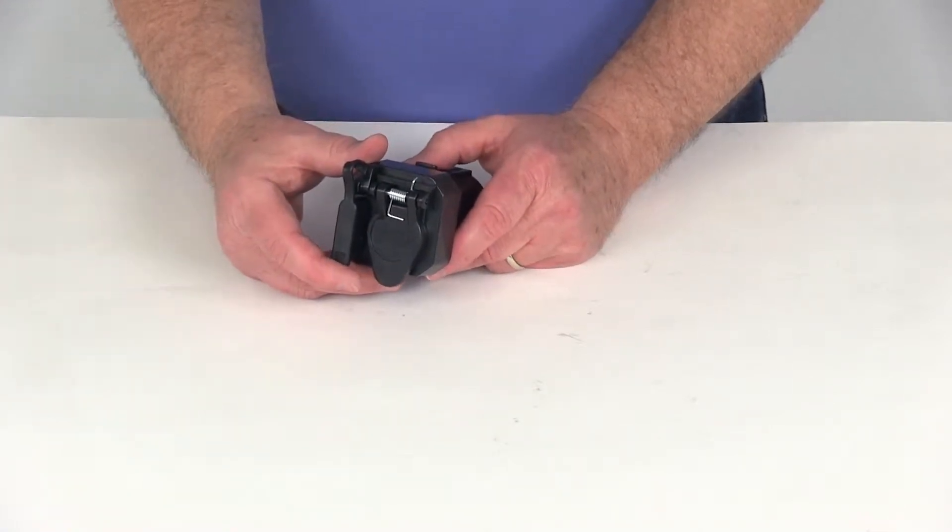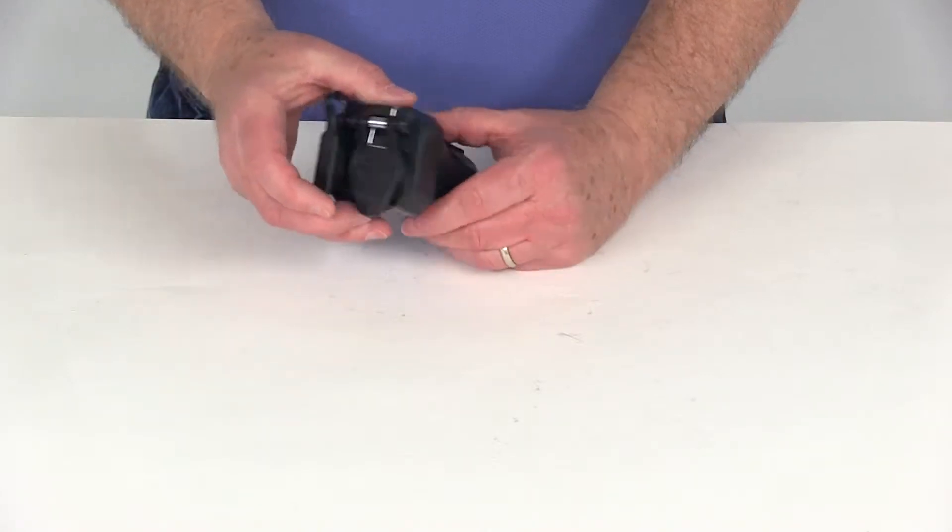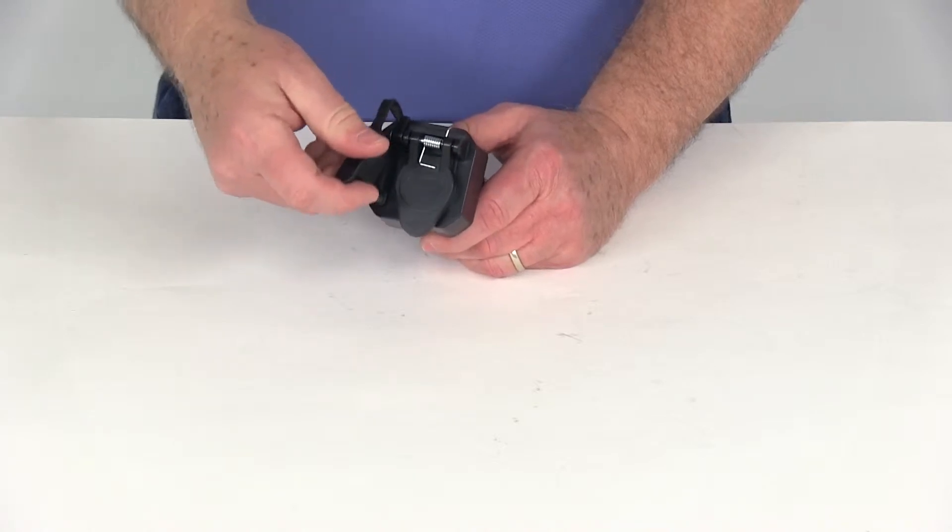Today we're going to review part number 37575. This is the Hopkins Multi-Tow 7-Way Blade to 6-Way Round or 4-Way Flat Adapter with the covers.